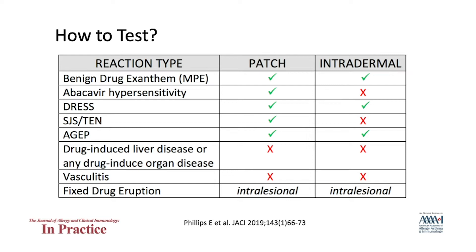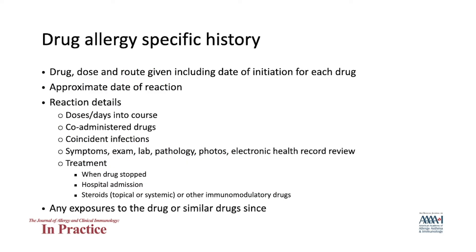Other phenotypes of interest where testing may be of utility include erythroderma associated with drugs, systemic reactivation of allergic contact dermatitis-like drug reactions, and photo-allergic reactions, where a special type of patch testing called photo patch testing is performed. Intradermal testing is avoided in SJS/TEN because of theoretical risk of a reaction. Patch testing is not thought to have utility in drug-induced organ-specific disease or in eruptions such as acneiform eruptions, drug-induced lupus, or autoimmune vesiculobullous diseases.